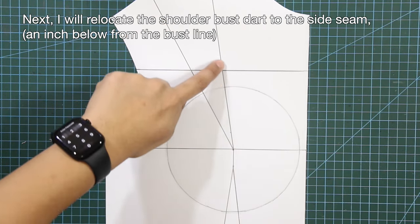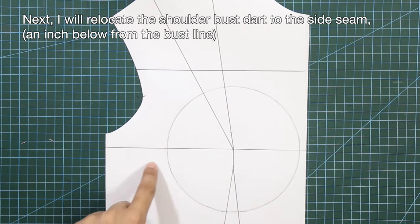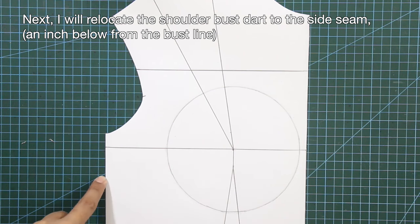Next, I will relocate the shoulder bust dart to the side seam an inch below from the bust line.